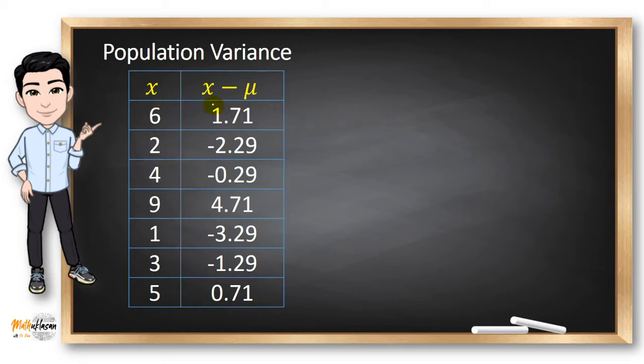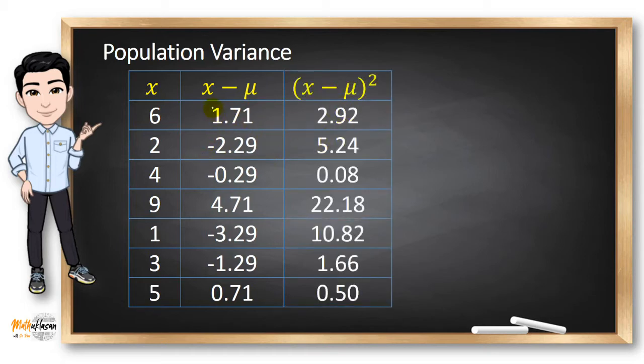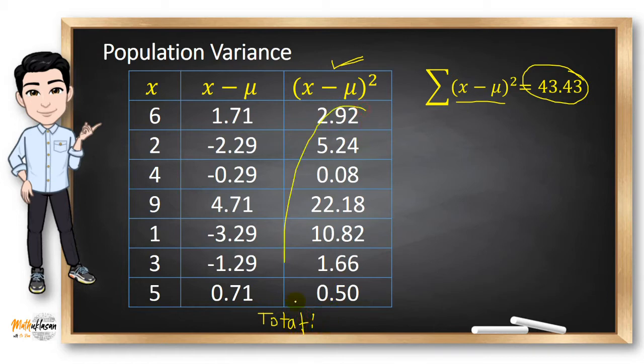The next step is to square each of these values for us to get this next column. By squaring 1.71, I got 2.92. By squaring 4.71, we have 22.18. Notice here that negative values are always squared, so we always have a positive variance. After completing this column, all you need to do is to add the values in this column for us to get the summation of (x - μ)². 43.43 was based in the total of this column. Adding these values will give us 43.43.